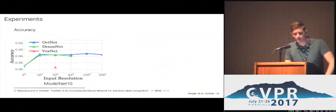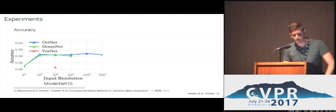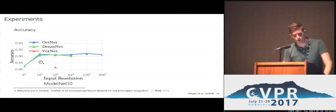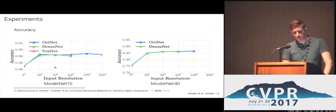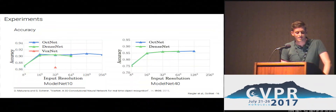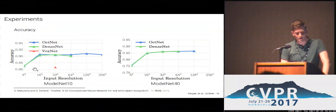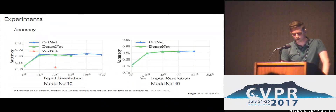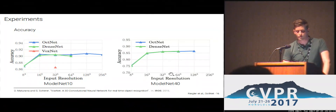We also ask whether we lose representational power with OctNet. Evaluating on ModelNet 10 and ModelNet 40 at various input resolutions, using the same network architecture for OctNet and the dense net, we get nearly the same classification accuracy. However, to our surprise, we noticed that high input resolution is not really needed for this task — you are almost done with 64³ for ModelNet 10 and 32³ for ModelNet 40.